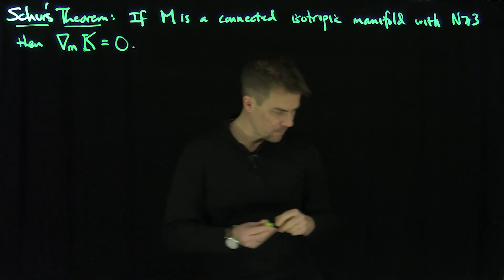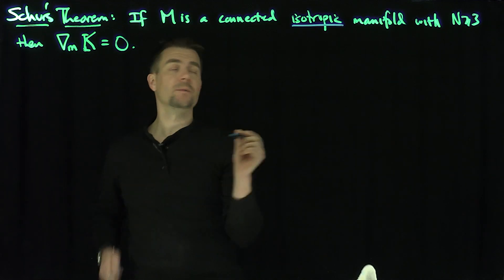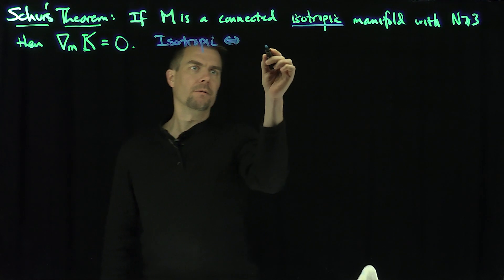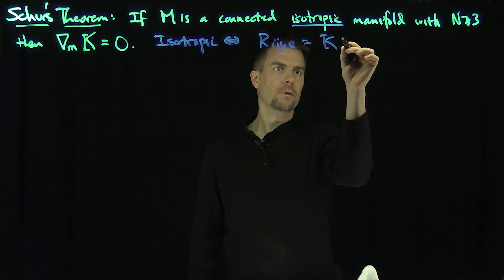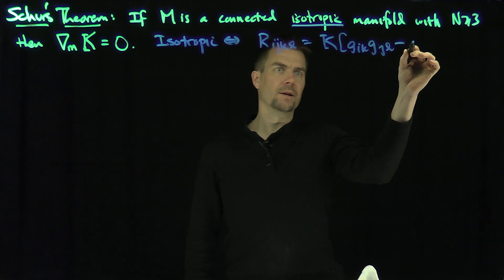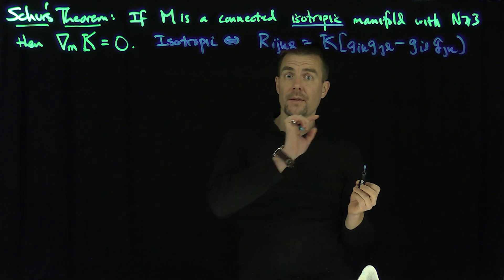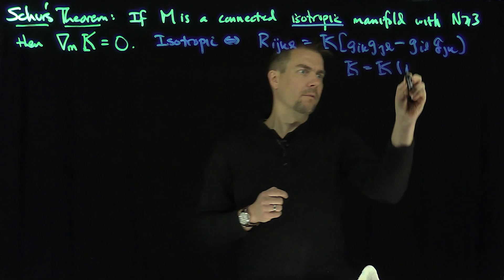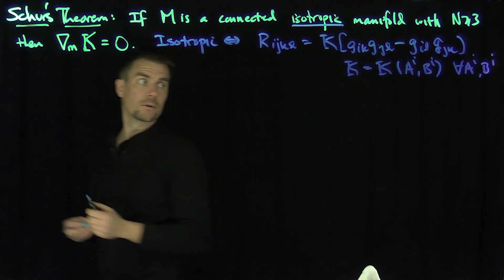And isotropic means the following: the Riemann curvature does not depend on the choice of planes — it doesn't depend on which section plane you choose. Isotropic if and only if R of ijkl is equal to the sectional curvature times (g_ik g_jl minus g_il g_jk), and there is no explicit dependence on the choice of covariant vectors. In other words, k is equal to k of a_i and b_i for every covariant vectors a_i, b_i we choose — independent of the choice of covariant vectors.